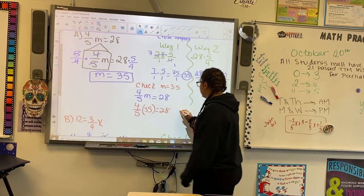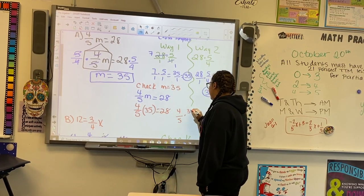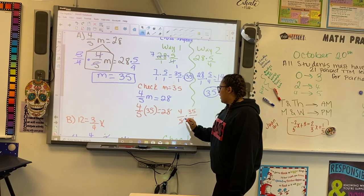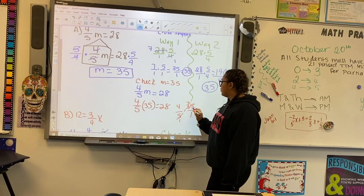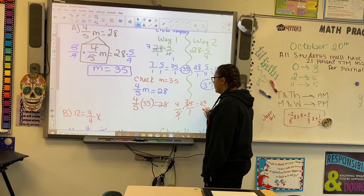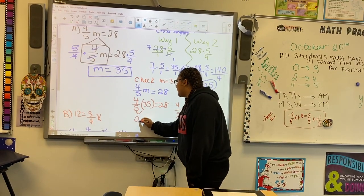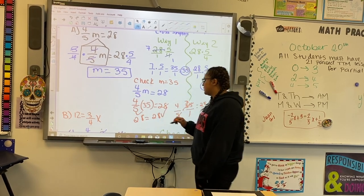We could go 4 over 5 times 35 over 1. I can cancel. 5 goes into 5 one time. 5 goes into 35 seven times, and 7 times 4 is 28 over 1. So, this equals 28. Does 28 equal 28? Yes, it does.